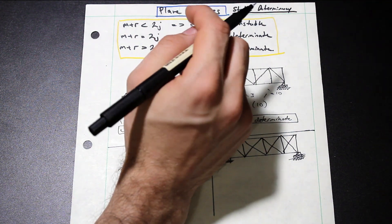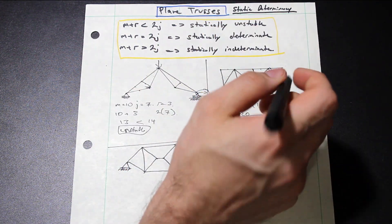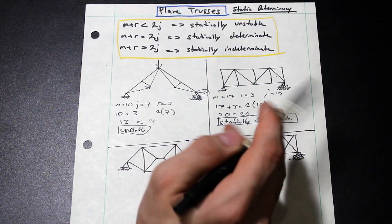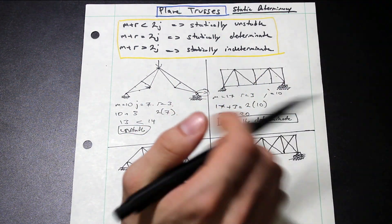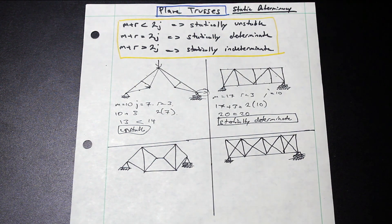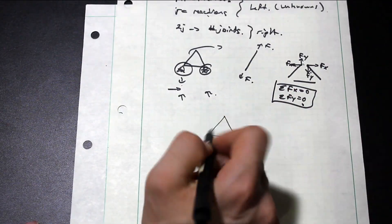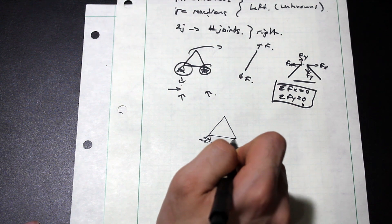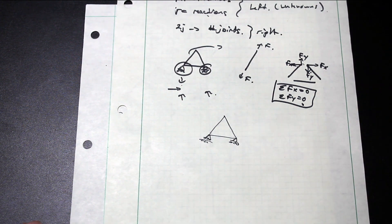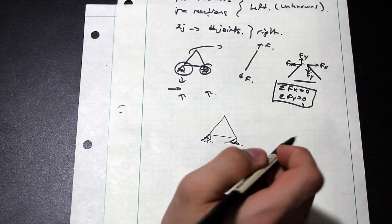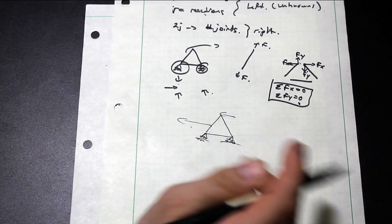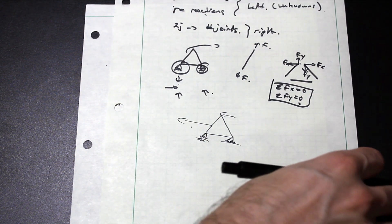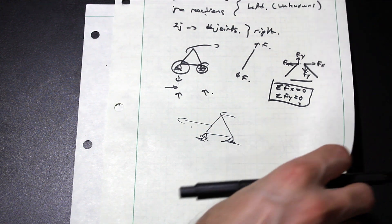So one thing to note about this one as well is we have three reactions here and the reactions aren't all parallel. That's also important. So for example, if we had a truss like this and it was on two rollers like this, obviously, this is an unstable truss because if we have a force this way, the truss is just going to move in this direction. So that's one condition as well for stability that you're going to need to take a look at.